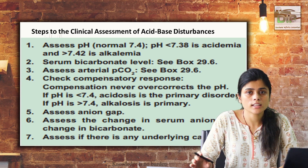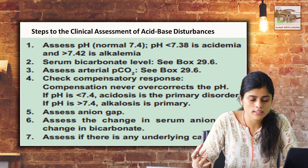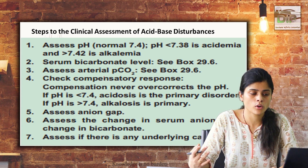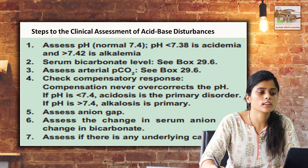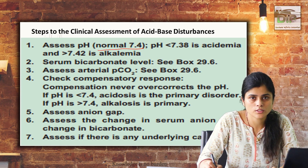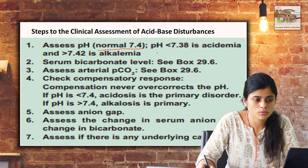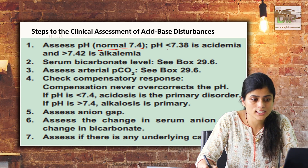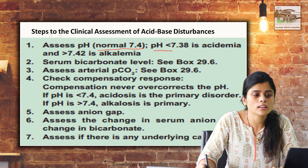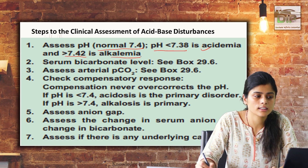Before moving on to acid-base imbalances, there are steps in the clinical assessment to determine if the patient has acid-base disturbances. The first thing to assess is whether the pH is normal or not. If the pH is normal at 7.4 there is no question of acidosis or alkalosis, but you have to look further as it might be compensated. If pH is less than 7.38 it is acidosis; more than 7.4 is alkalemia.